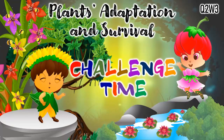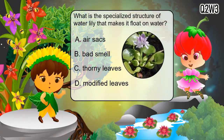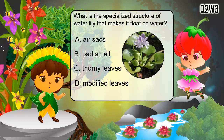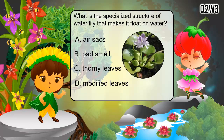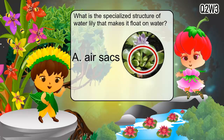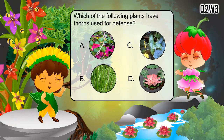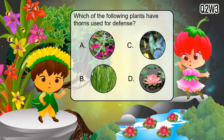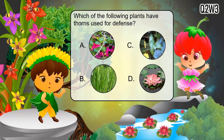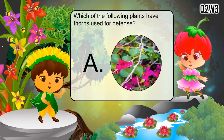It's challenge time! What is the specialized structure of a water lily that makes it float on water? A. Air sacs. B. Bad smell. C. Thorny leaves. D. Modified leaves. The correct answer is A — air sacs. Which of the following plants have thorns used for defense? The correct answer is A — bougainvillea. You got it right!